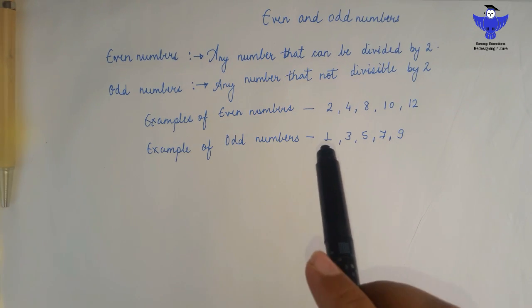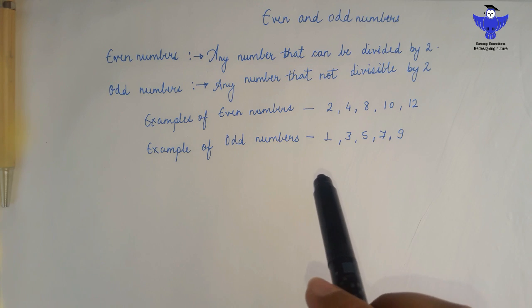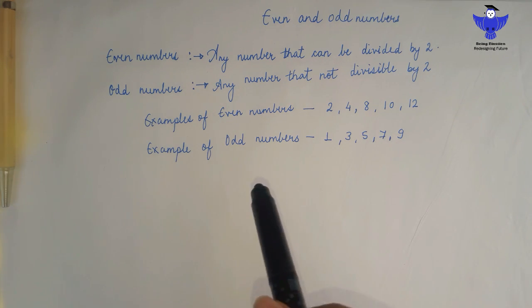Examples of odd numbers: 1, 3, 5, 7, 9. If you divide these numbers by 2, they will not be fully divisible. Some remainder will arrive.